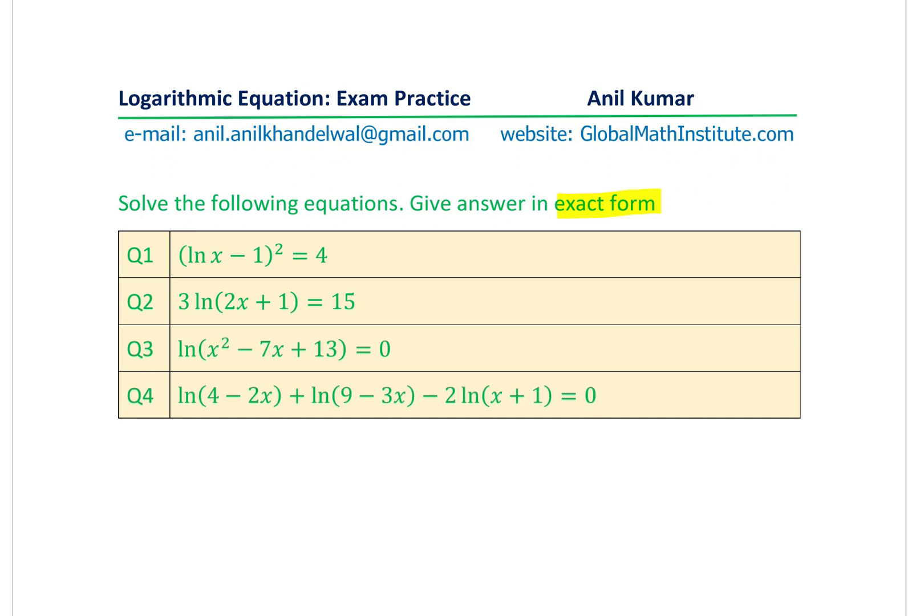The four questions are: Question 1 — ln(x−1)² = 4. Question 2 — 3·ln(2x+1) = 15. Question 3 — ln(x²−7x+13) = 0. Question 4 — ln(4−2x) + ln(9−3x) + 2·ln(x+1) = 0. You can always pause the video, answer the question, and then look at my suggestions.